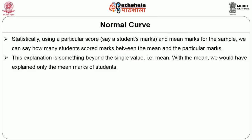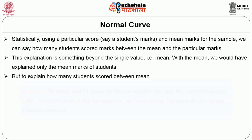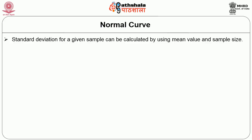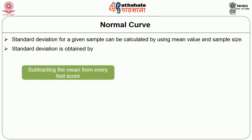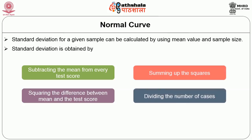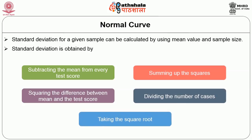This explanation goes beyond the single value of the mean. To explain how many students scored between, say, 58 marks and 75 marks, we need to calculate the standard deviate units. The expression for this calculation is: raw score minus the mean, divided by the standard deviation. Standard deviation for a given sample can be calculated using the mean value and sample size. It is obtained by first subtracting the mean from every test score, then squaring the difference, summing up the squares, dividing by the number of cases, and finally taking the square root.